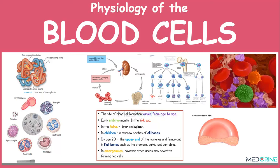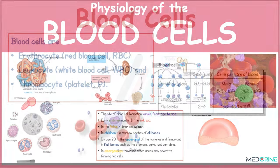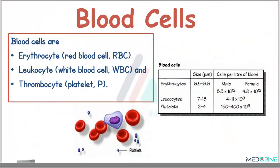Welcome to MedCrine. Today we shall be looking at the physiology of the blood cells. A normal human blood is composed of various types of blood cells. These blood cells include erythrocytes, white blood cells, and thrombocytes.